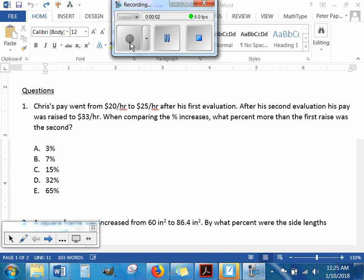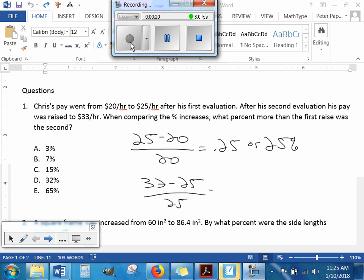Please select your answer for number one. We have to find the percent growth, so 25 minus 20 divided by 20, that is 0.25 or 25%. For his second evaluation, he went from 25 to 33, and that is 0.32 or 32%. So if we went from 25% to 32%, that would be a 7% growth. The answer is B.